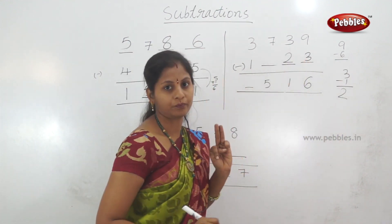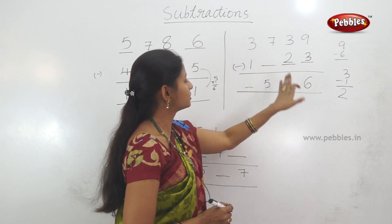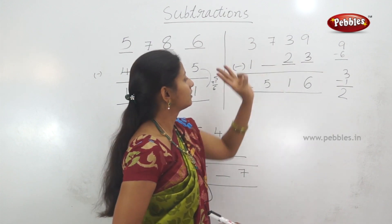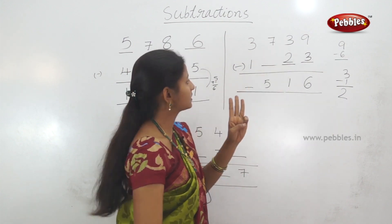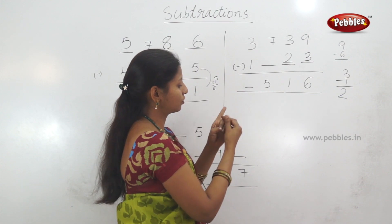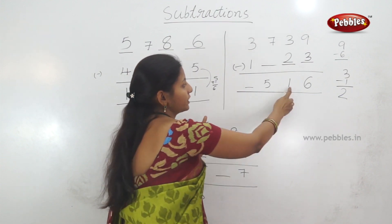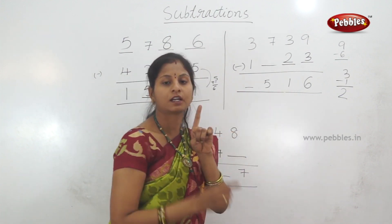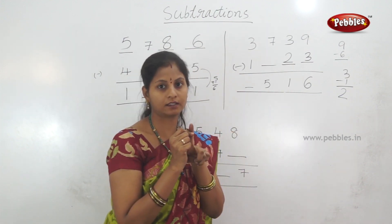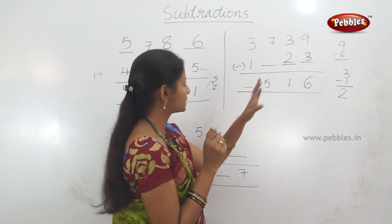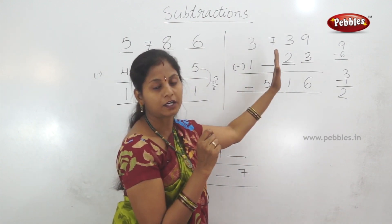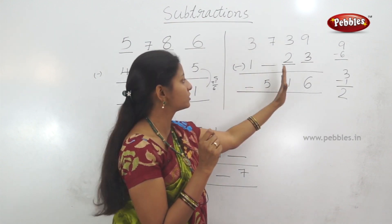So, 3 minus 2 is equal to 1. It is correct. If you have 3 fingers open, 2 close, then the answer is 1. So, here we have 1 finger open. If you have correct. The last one digit is correct. In the 10th place, 3 minus 2 is correct.